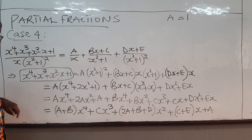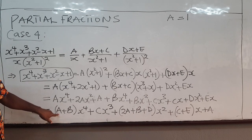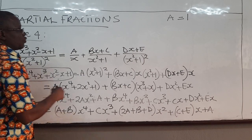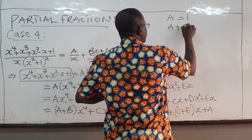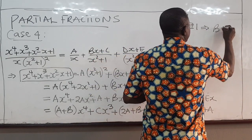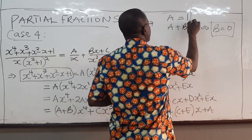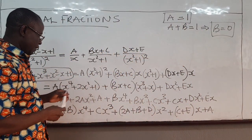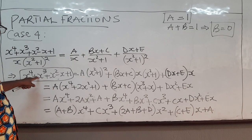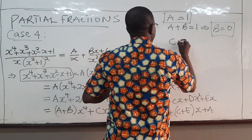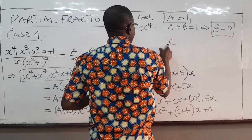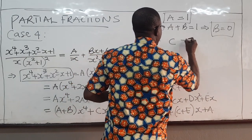Comparing coefficients of x to the power 4: A plus B equals 1. Since A is 1, B equals 0. Comparing the cubic terms: C times x cubed matches x cubed on the left, which has coefficient 1, so C equals 1.